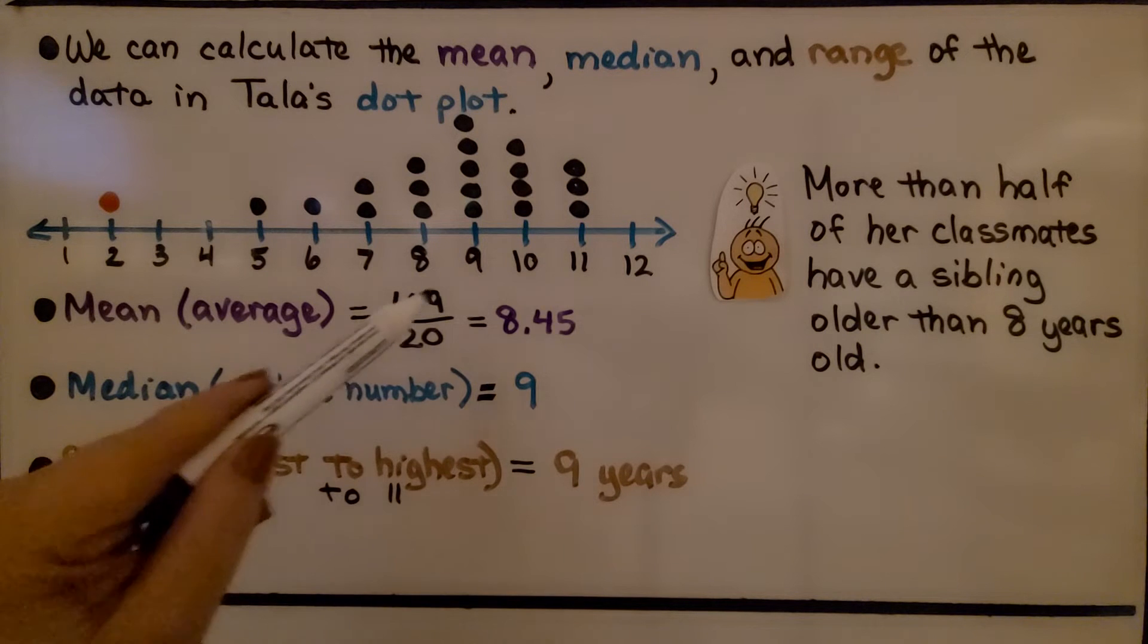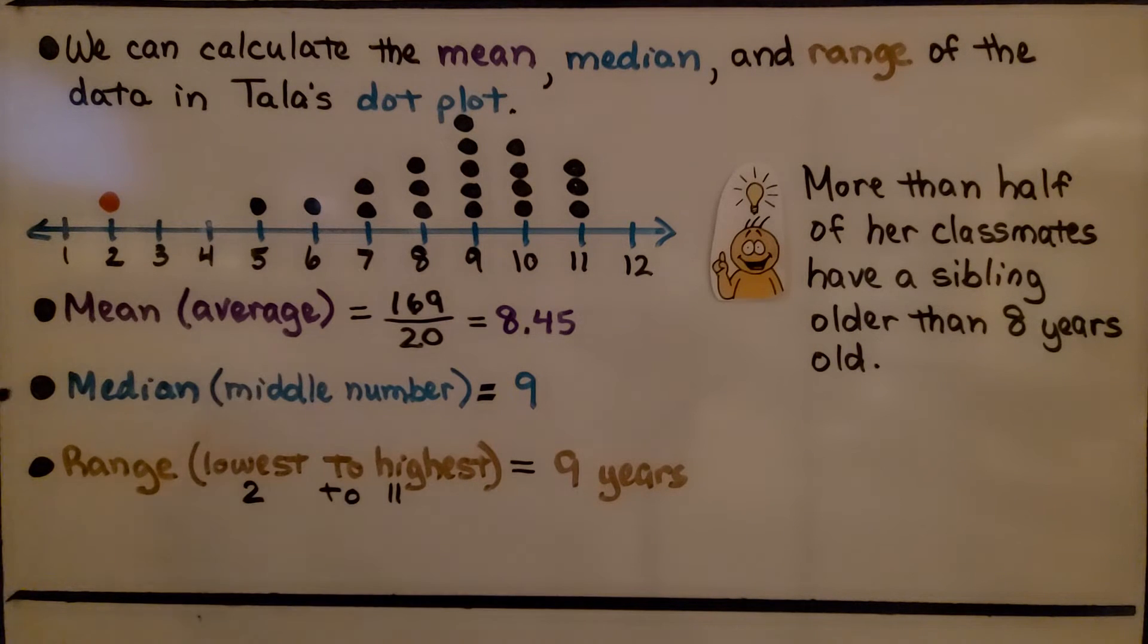We get 8 and 45 hundredths. The median would be the middle number, that is 9. And the range would be the lowest to highest, that would be from 2 to 11. The range is 9 years.